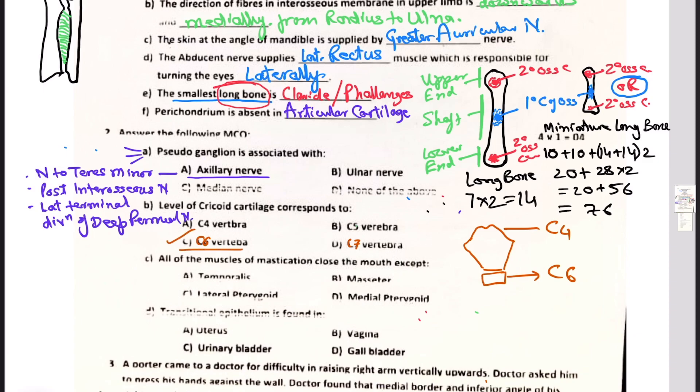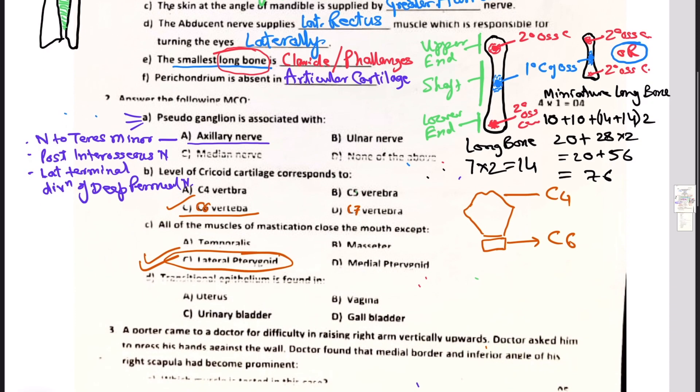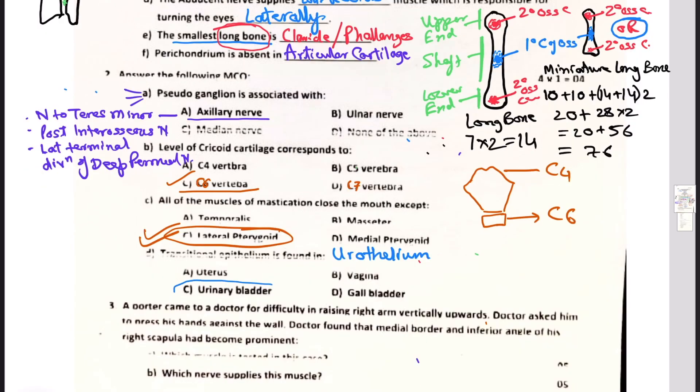Question C: all the muscles of mastication close the mouth except - temporalis, masseter, lateral pterygoid, or medial pterygoid. Everybody knows this has been made to learn in each of the classes, so it's lateral pterygoid. Among the muscles of mastication, lateral pterygoid will help in opening the mouth. Other accessory muscles include geniohyoid and anterior belly of digastric. Transitional epithelium is found in uterus, vagina, urinary bladder, or gallbladder. The transitional epithelium is also called urothelium and it is present in renal pelvis, ureter, urinary bladder, and the prostatic urethra in males.